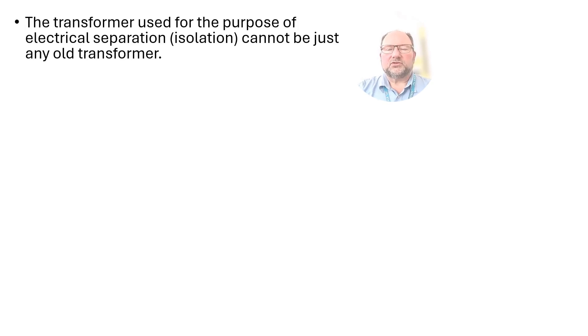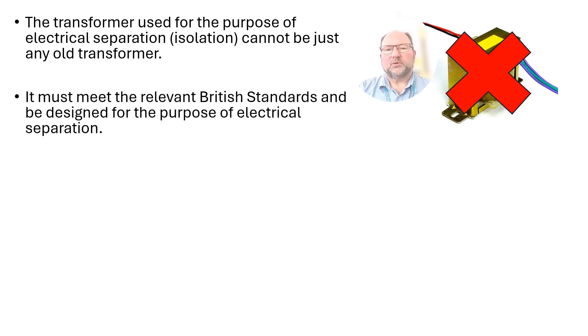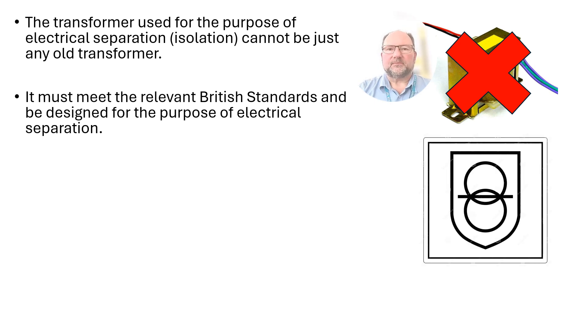Now, the transformer that's going to be used for the purpose of electrical separation, the isolation transformer, can't just be any old transformer. It's actually got to be a transformer that meets the required British standard and the specification. And there's the British standard there. And you should also find on that transformer somewhere or on the unit anyway, that symbol that's displayed there. That's from BS 7671 to denote that is a transformer that's designed for electrical separation.